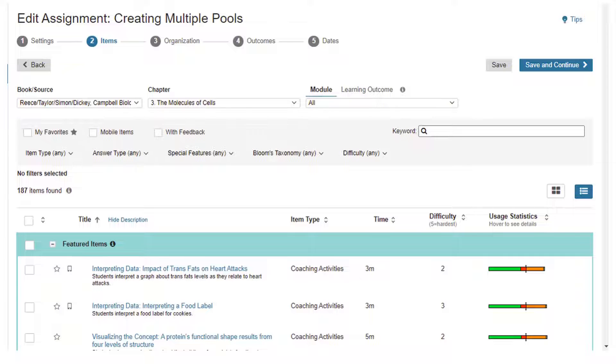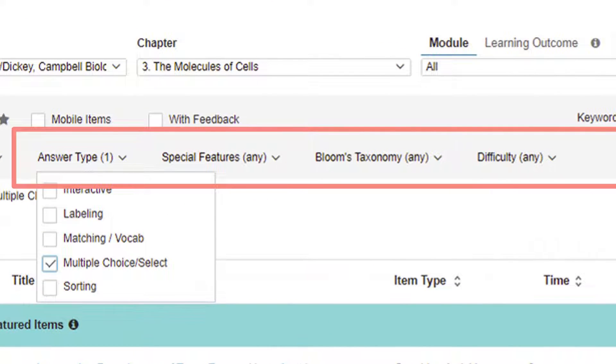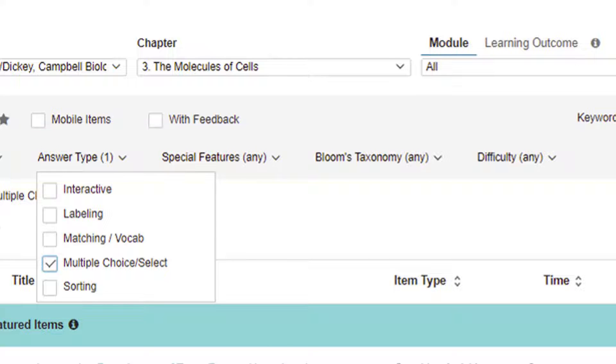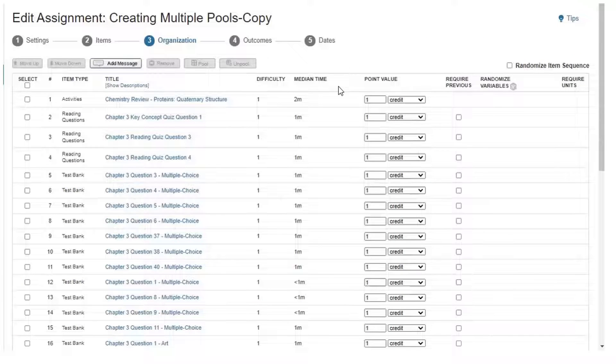Create or edit an assignment by selecting items. You may want to use filters to find items with similar types and difficulties. Go to Organization.